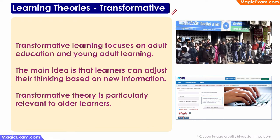The transformative learning theory focuses mainly on adult education and young adult learning, and is particularly relevant to older learners. This theory says that learners can adjust, transform, or change their thinking, knowledge, and behavior based on new information. For example, for the older generation, banking meant going to a branch, standing in a queue, getting a passbook updated manually, and drawing cash from a cash counter. But now all banks have internet banking, and even older learners have transformed — they now use internet banking for all their banking work. People can change, adapt, and change their behavior because new knowledge has come to them.